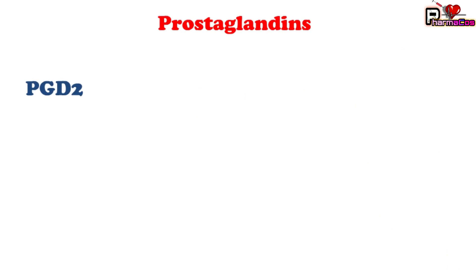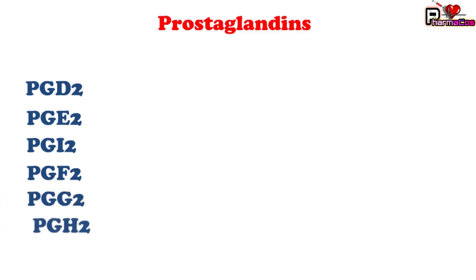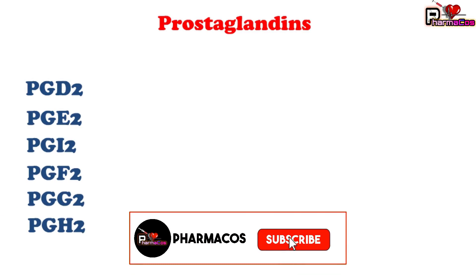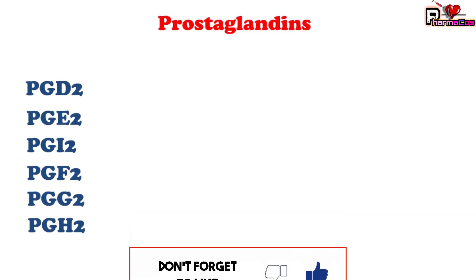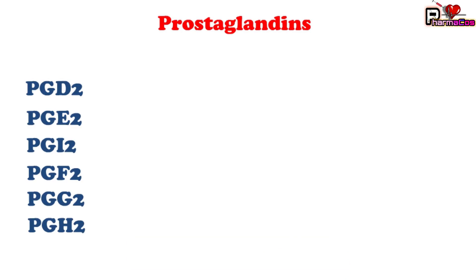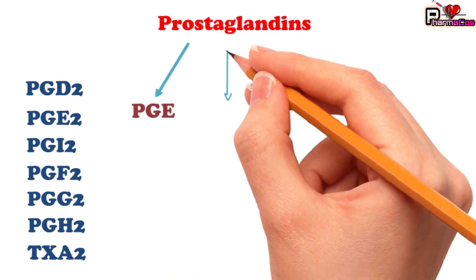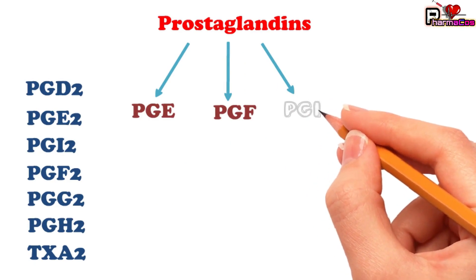Today let us discuss about prostaglandins. Prostaglandins can be classified into different categories: prostaglandin D2, prostaglandin E2, prostaglandin I2, prostaglandin F2, prostaglandin G2, and prostaglandin H2. The last two — prostaglandin G2 and prostaglandin H2 — are cycloendoperoxides. Apart from these, we also have another mediator, thromboxane A2, which is derived from the same pathway. Therapeutically, we can find three types of prostaglandin analogs: prostaglandin E analogs, prostaglandin F analogs, and prostaglandin I analogs.